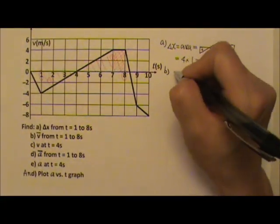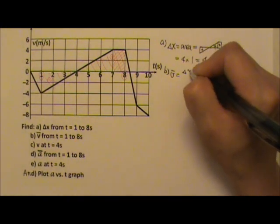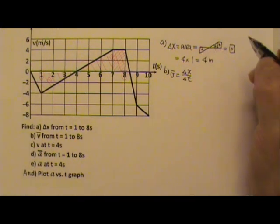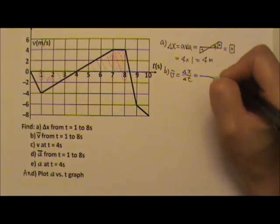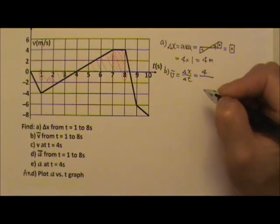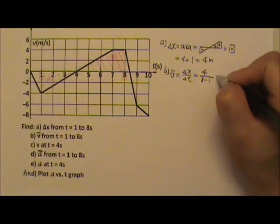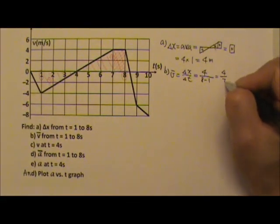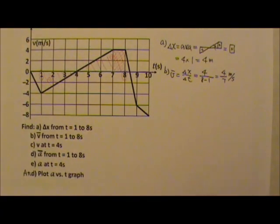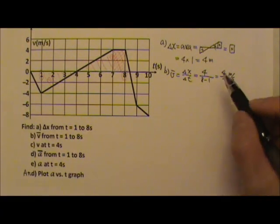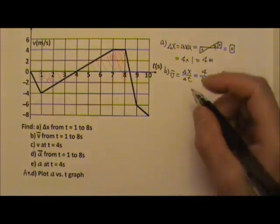For average velocity, we use displacement divided by time. That gives us 4 meters divided by the delta t — final time minus initial time — which is 7 seconds. So the average velocity is 4 sevenths meters per second, positive, meaning it's in the positive x direction.